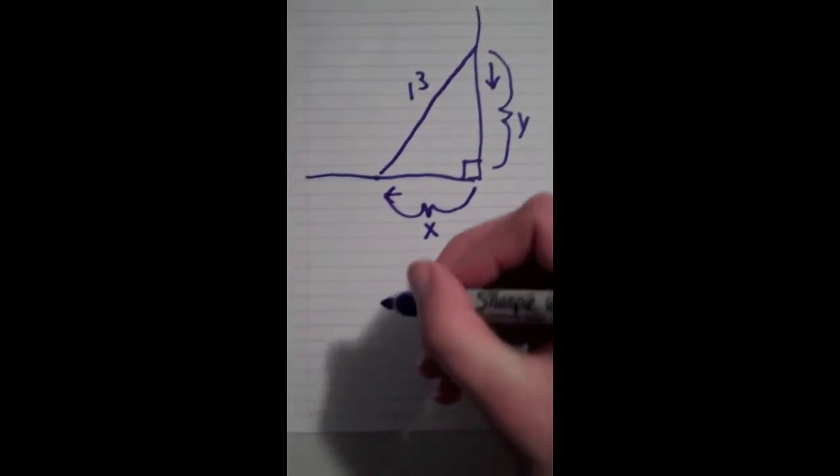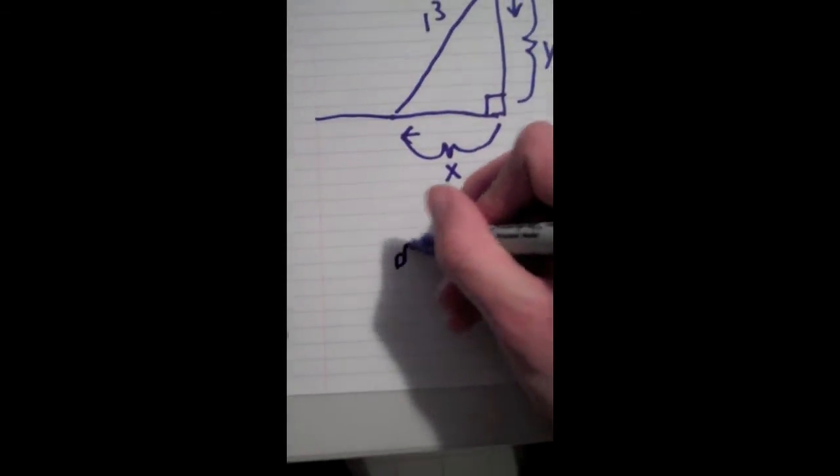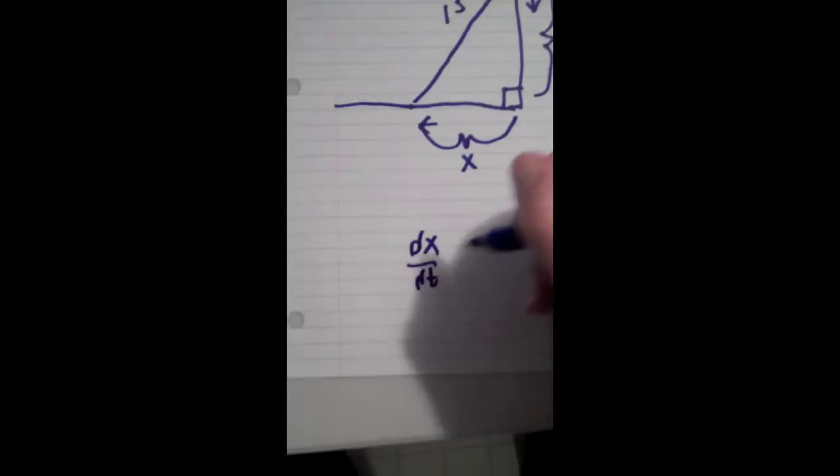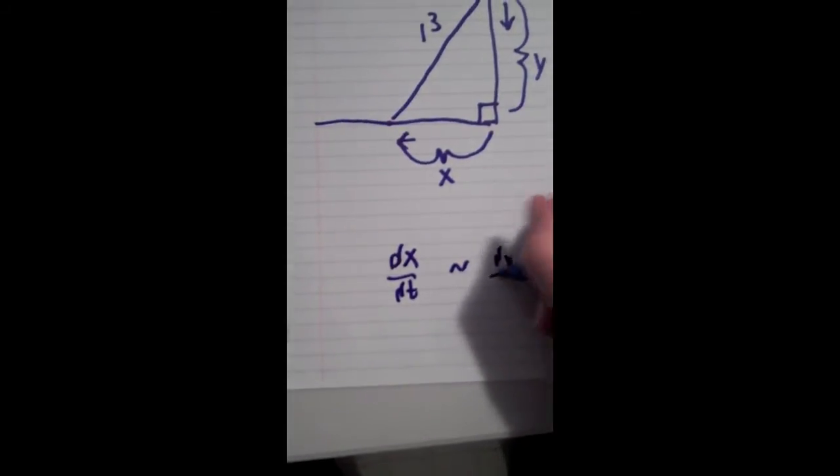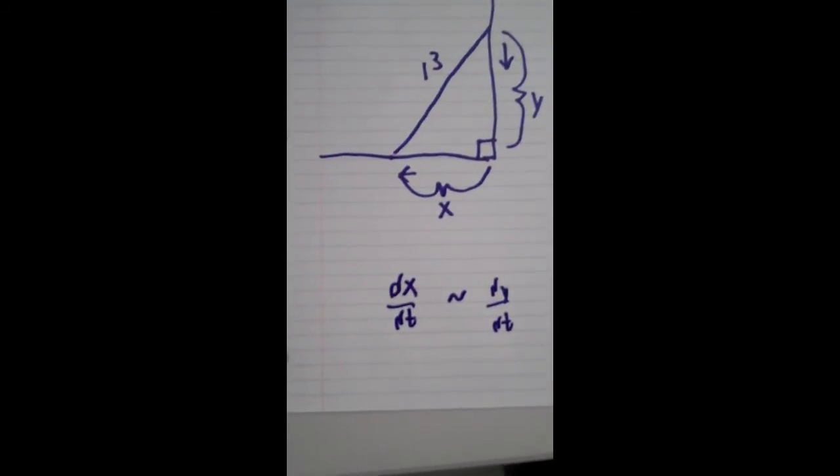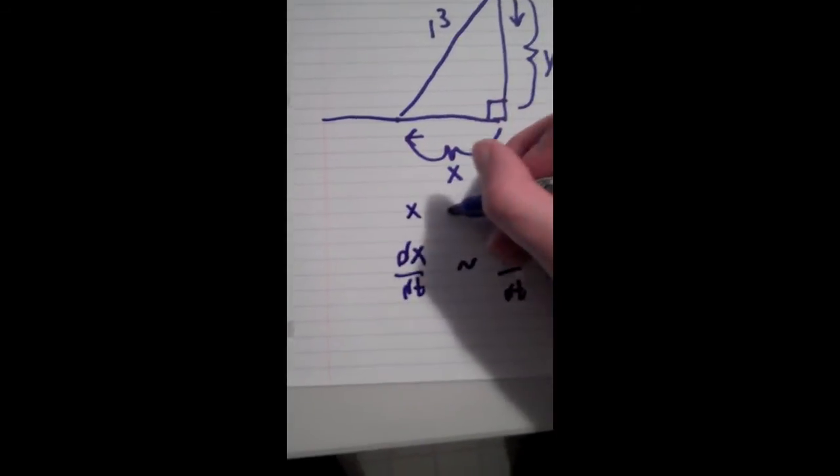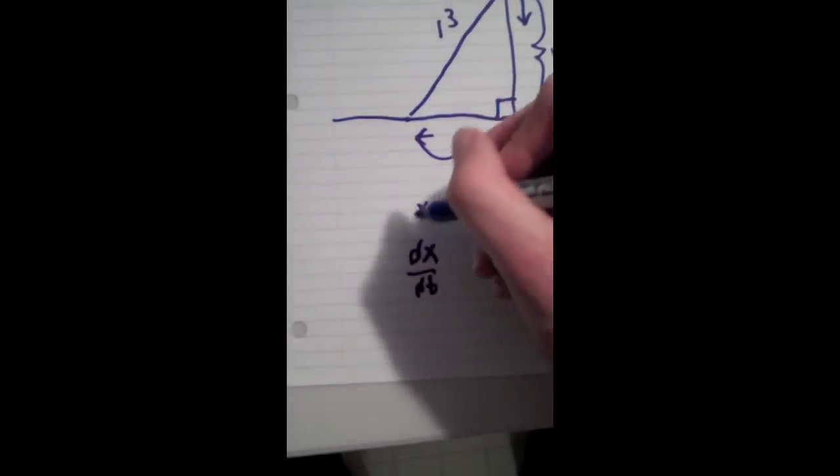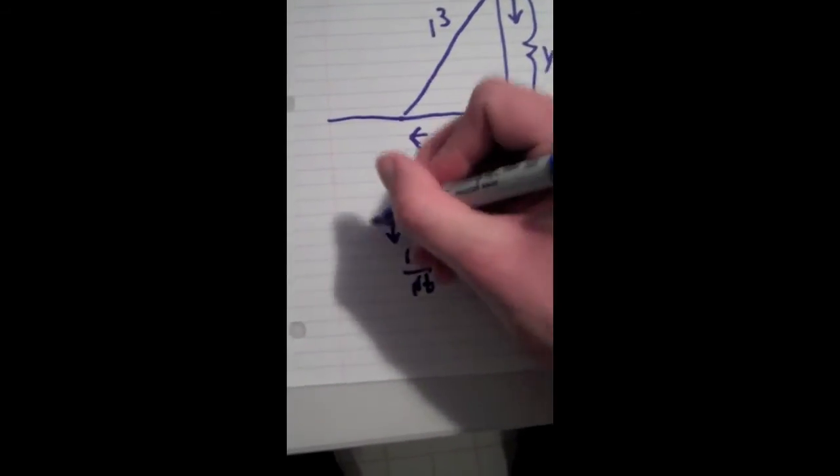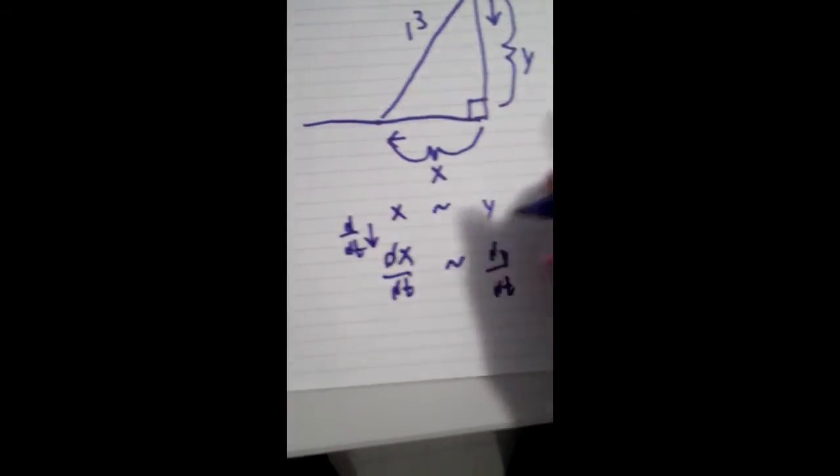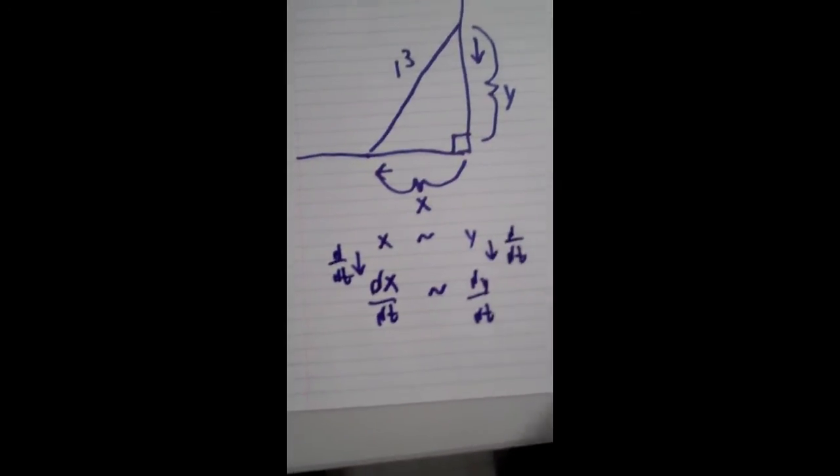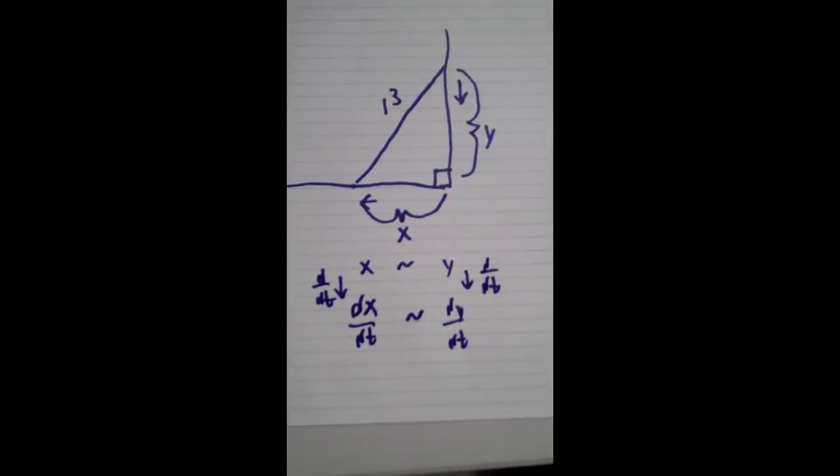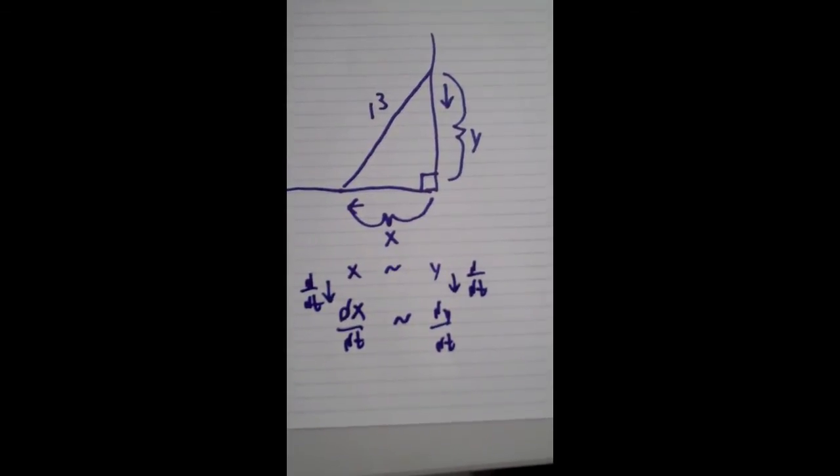And so how we solve this problem is we need an equation that relates dx/dt to dy/dt. And the way that you do that is you find an equation that relates x to y. And then you take the derivative with respect to time of both sides, and that leaves you with an equation that relates the rate of change of x to the rate of change of y. So that's sort of the game plan.